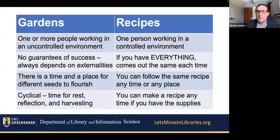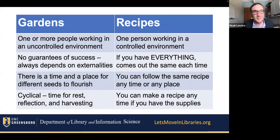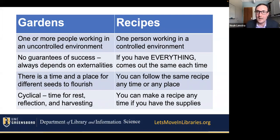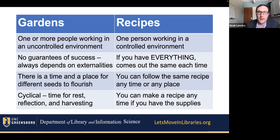Before I go a little bit deeper into those steps, I want to be clear about how a garden is different from a recipe and why that difference matters. When I'm talking with librarians, I often hear people say: just give me a recipe — I want to start a seed library, give me a recipe. There is no recipe. The recipe implies that one person working in a controlled environment who has all the ingredients can follow those steps in a sequential fashion every single time and end up at the same result. The garden is completely different — you are working in an uncontrolled environment, there's no guarantee of success, you're always dependent on externalities, there's always a time and a place, and you need time for rest, reflection, and harvesting. We need to stop talking about recipes and start talking about gardens, because that's a more accurate depiction of the work that librarians actually do.